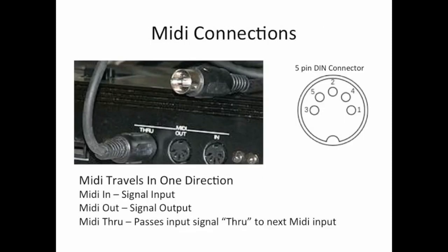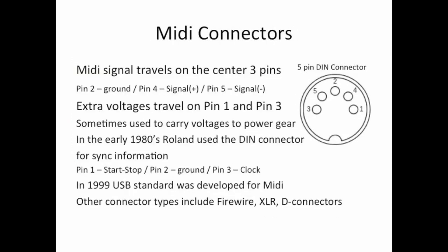Here's a good example of the early days of MIDI — this is what a MIDI connector looks like. MIDI travels in one direction, so the backs of gear always had MIDI in, MIDI out, and MIDI through. MIDI through just passes the MIDI to the next piece of gear. If you had multiple pieces of gear you could daisy chain them and send channel 1 to the first piece of gear, channel 2 to the second, channel 3 to the third — delegating drums to the first, bass to the second, strings to the third, and so on.